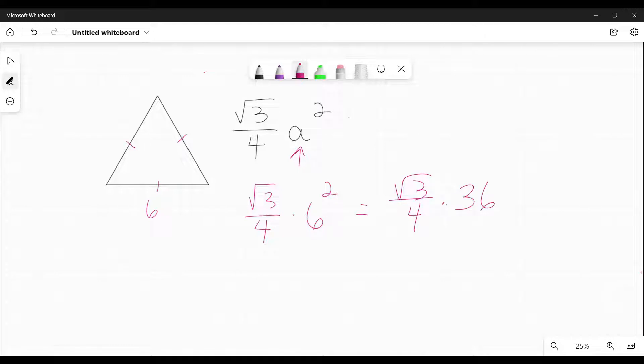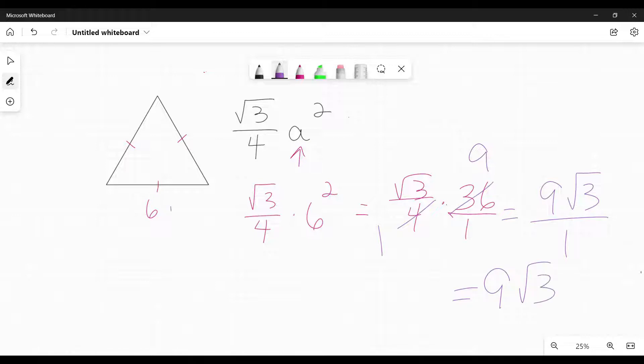So six squared is 36. And since 36 is the same as 36 over one, we can treat this like two fractions and we can do some canceling. I have a four on bottom and a 36 on top. I have the common factor of four. Four goes into four one time. It goes into 36 nine times. So I'm left with on top nine times the square root of three on the bottom. One times one. So it's just nine times the square root of three. And whatever units this was, let's say inches, it would be inches squared. And that would be my area. And that's how you use that formula.